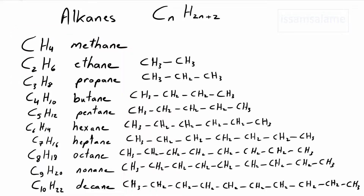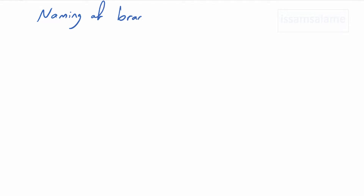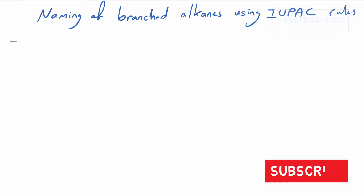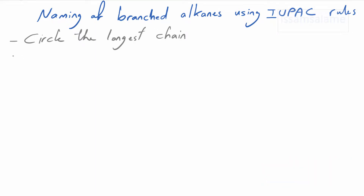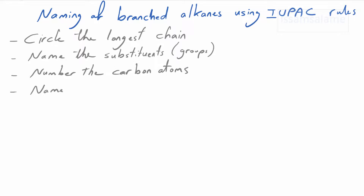That was regarding straight chains. What about branched chains? If you still don't know how to differentiate between straight and branched chains, watch my previous video — I'll keep a link in the description below. To name branched-chain alkanes, I'm going to use IUPAC rules. The rules are summarized as follows: circle the longest chain, name the substituents or groups, number the carbon atoms, and then name the whole compound.